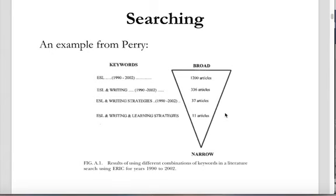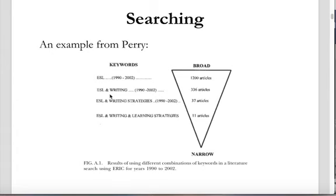Maybe some of those articles aren't actually relevant or not asking the same kinds of questions you're interested in. To broaden out, you can drop specific terms from your research question and look at more general areas. Dropping 'learning strategies' gives you general background on ESL and writing — about three and a half times as many articles, because it's a more general selection of literature. If you just search for ESL writing, you'll get hundreds of papers and won't be able to read all of them, though you could browse a few pages if you're not finding what you need with more specific searches.